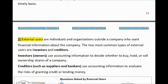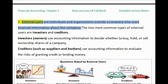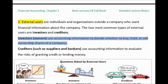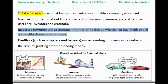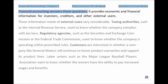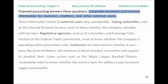External users are individuals and organizations outside a company who want financial information about the company. The two most common types of external users are investors and creditors. Investors and owners use accounting information to decide whether to buy, hold, or sell ownership shares of a company. Creditors, such as suppliers and bankers, use accounting information to evaluate the risks of granting credit or lending money. Financial accounting provides economic and financial information for investors, creditors, and other external users.